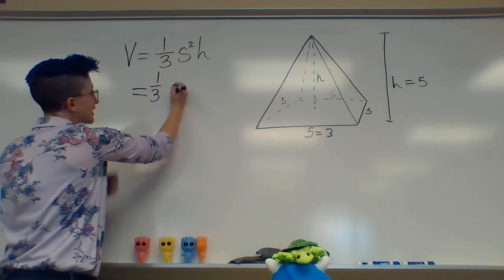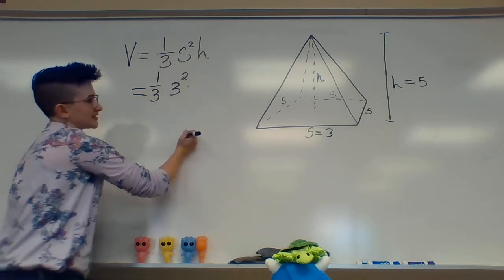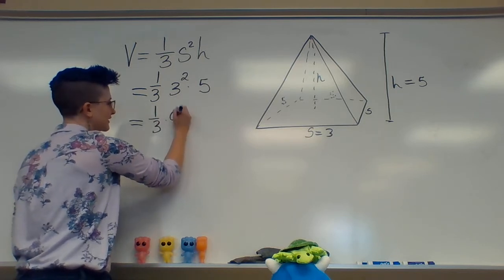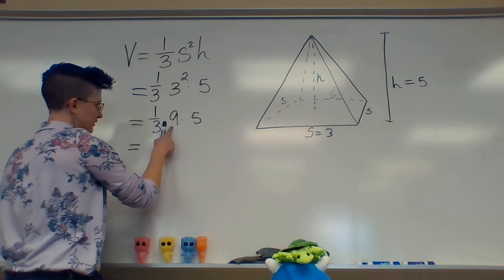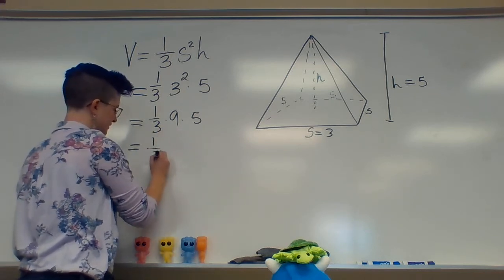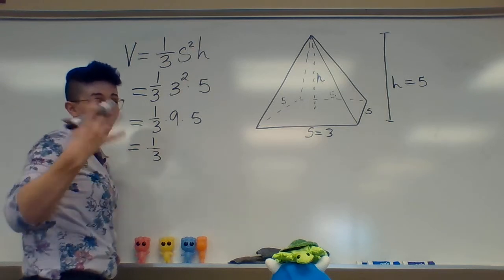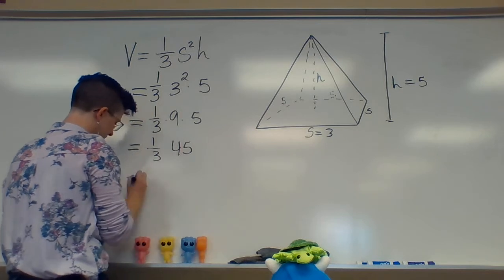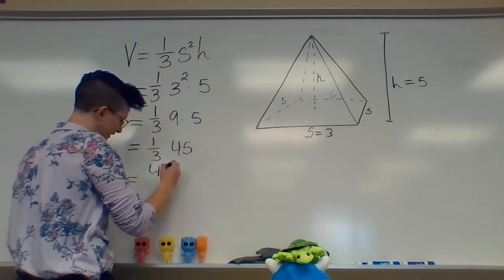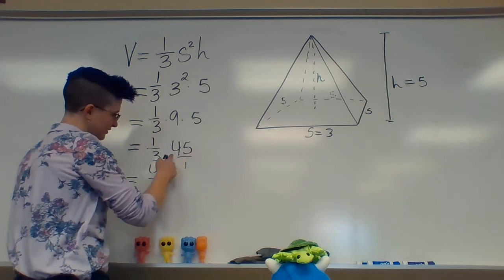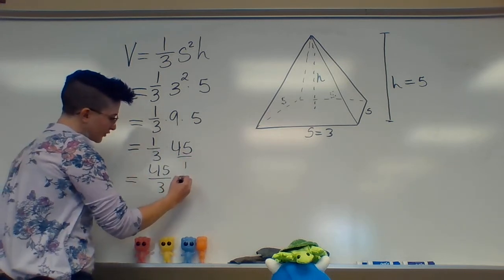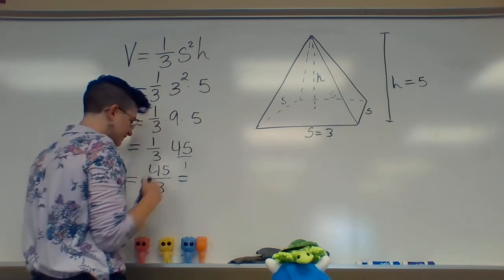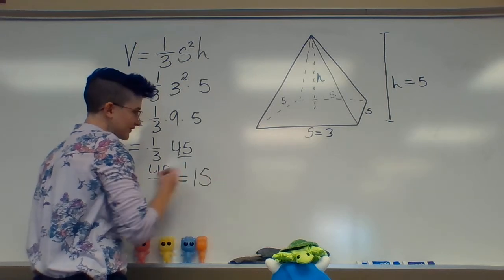So we're going to replace our s with three, we're going to replace our h with five. So I have one-third times three squared is nine, times five. I like to do nine times five first. So nine times five is 45. And now we do 45 times one-third, which turns into 45 over three, because remember this is over one, so I just multiply across. 45 divided by three. You can pause me and do that. If you're too lazy to do that and you just want the answer, the answer is 15.